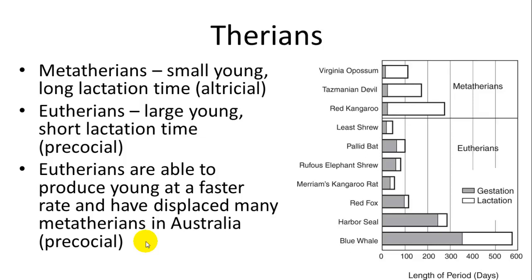This is called precocial young — generally more developed when born. Altricial young are generally less developed when born. There are many gradations within this pattern. Metatherians spend much less time in gestation and more time in lactation, while eutherians are the opposite. Eutherians appear to be more efficient in this reproductive pattern; they can produce young at a faster rate, which has allowed some of them to displace many metatherians in places like Australia.